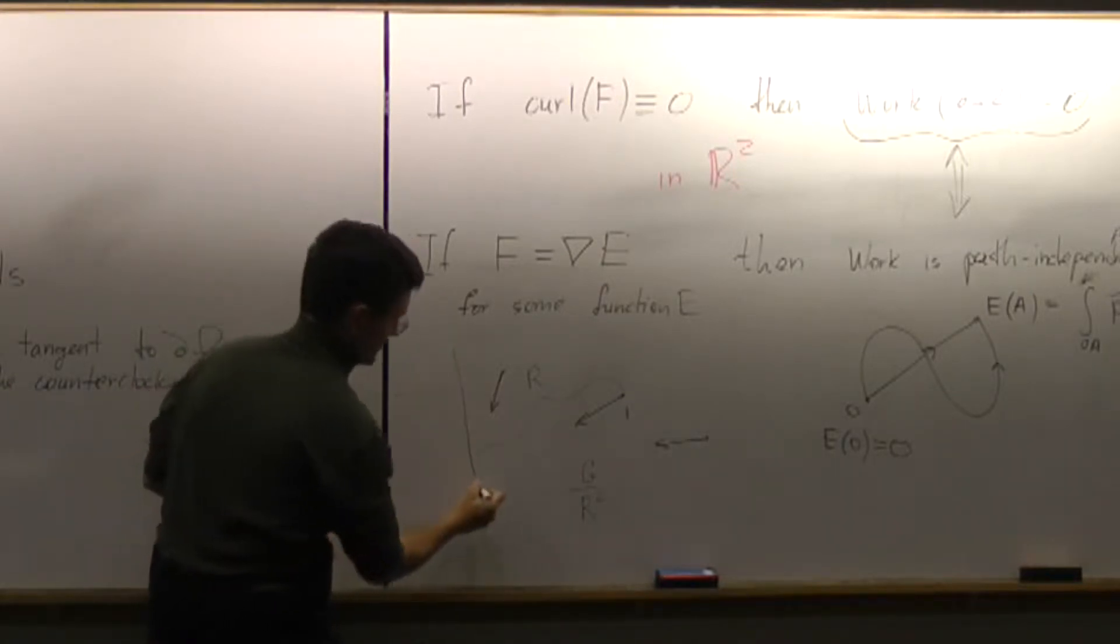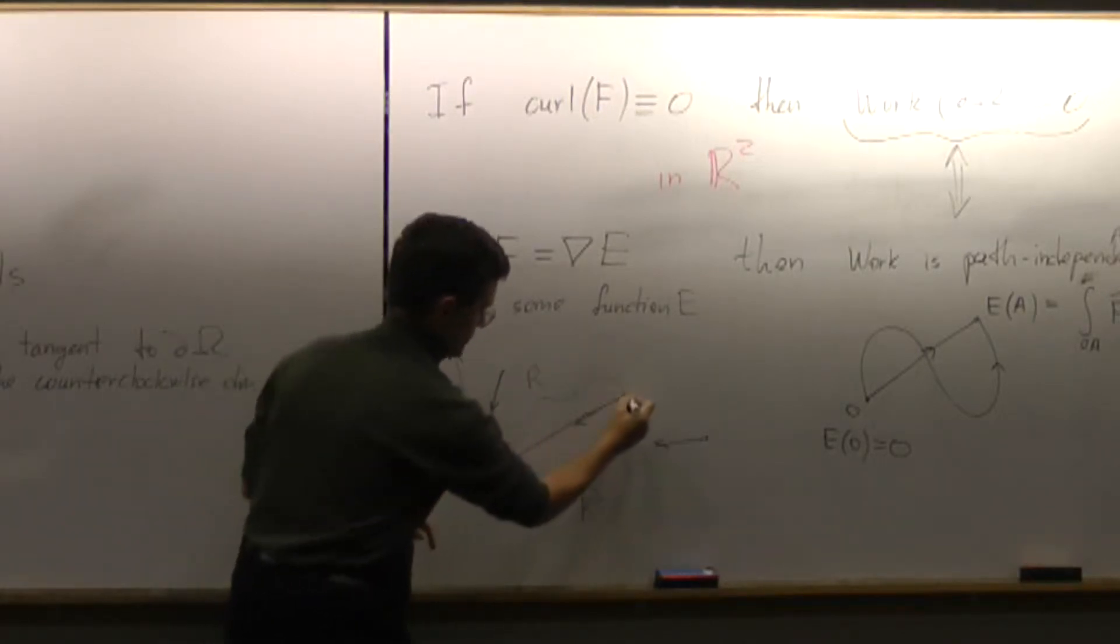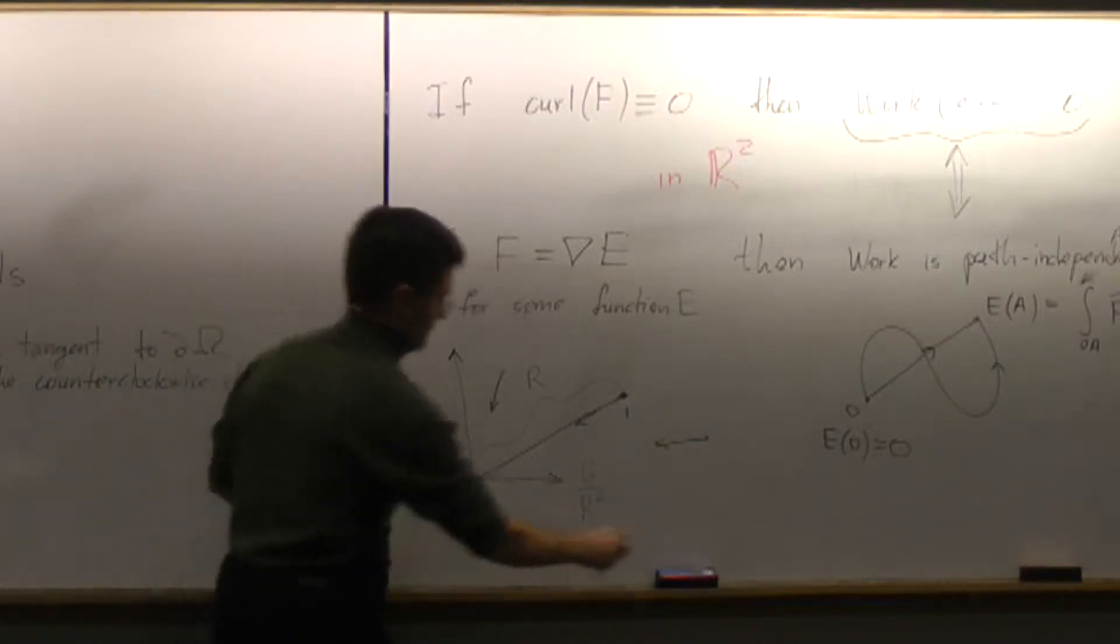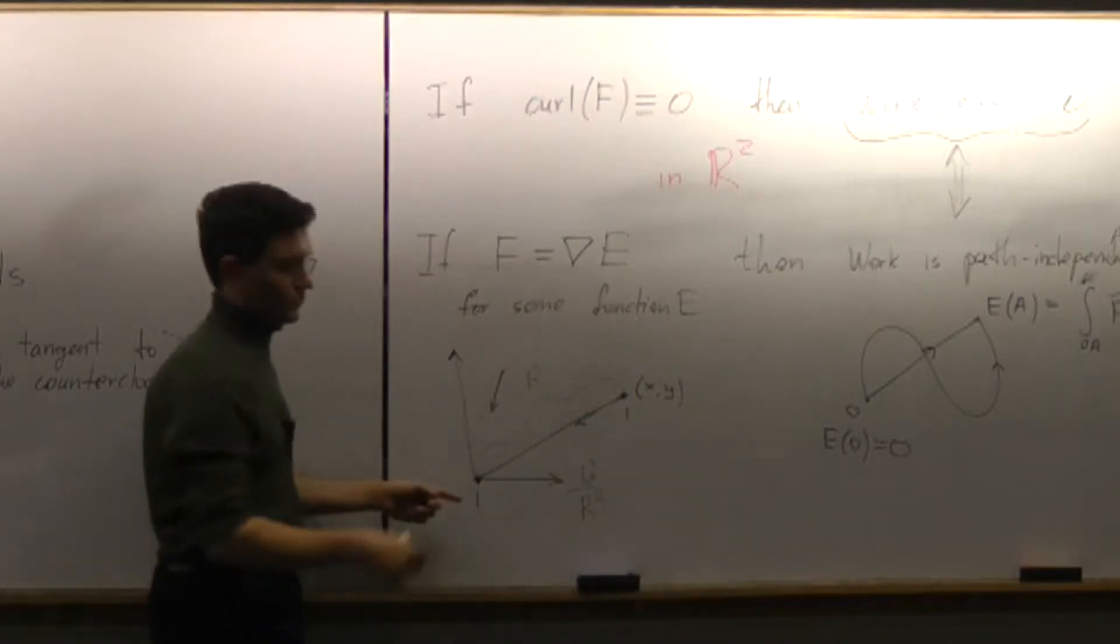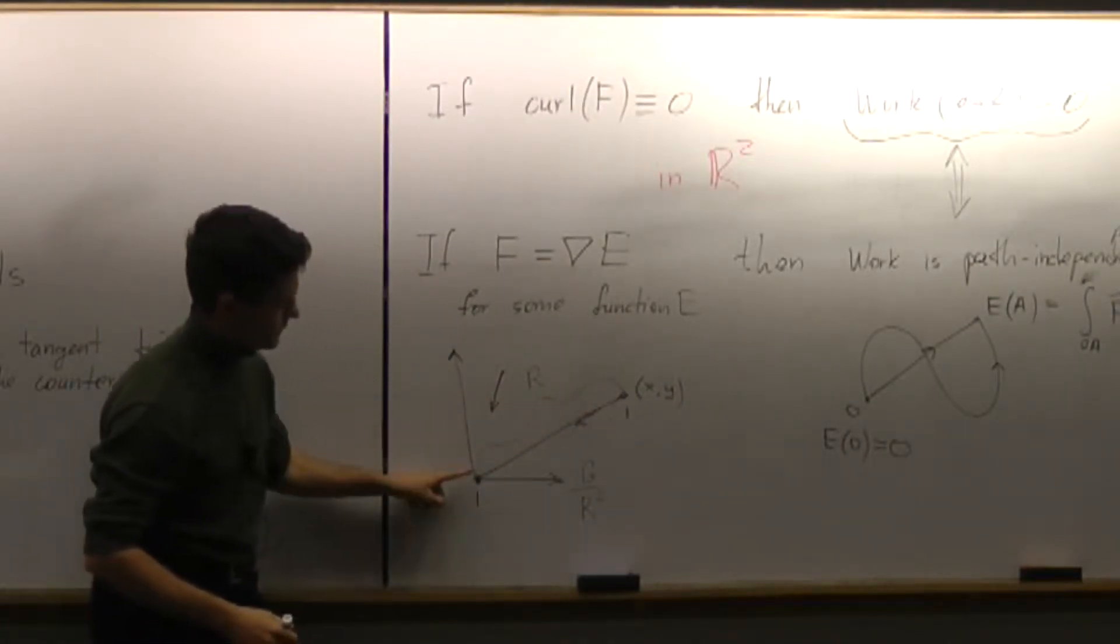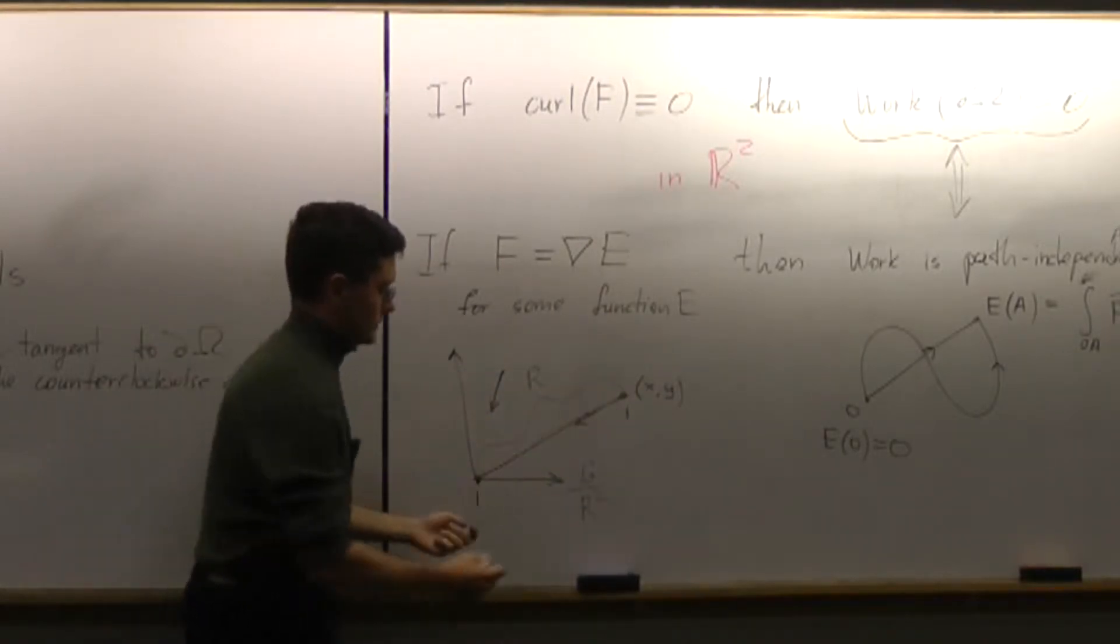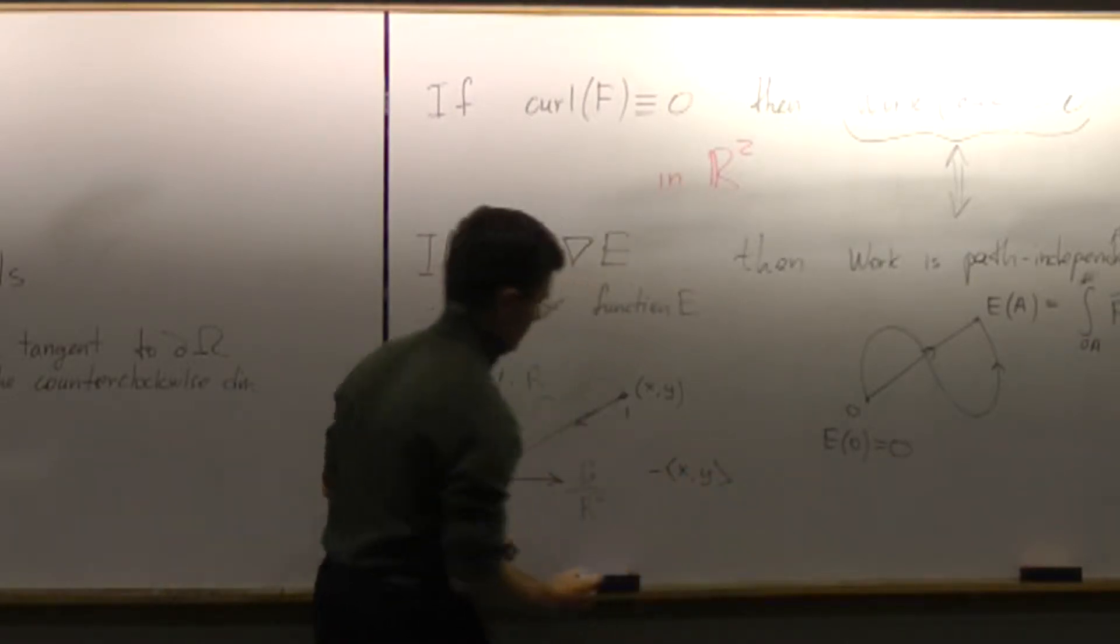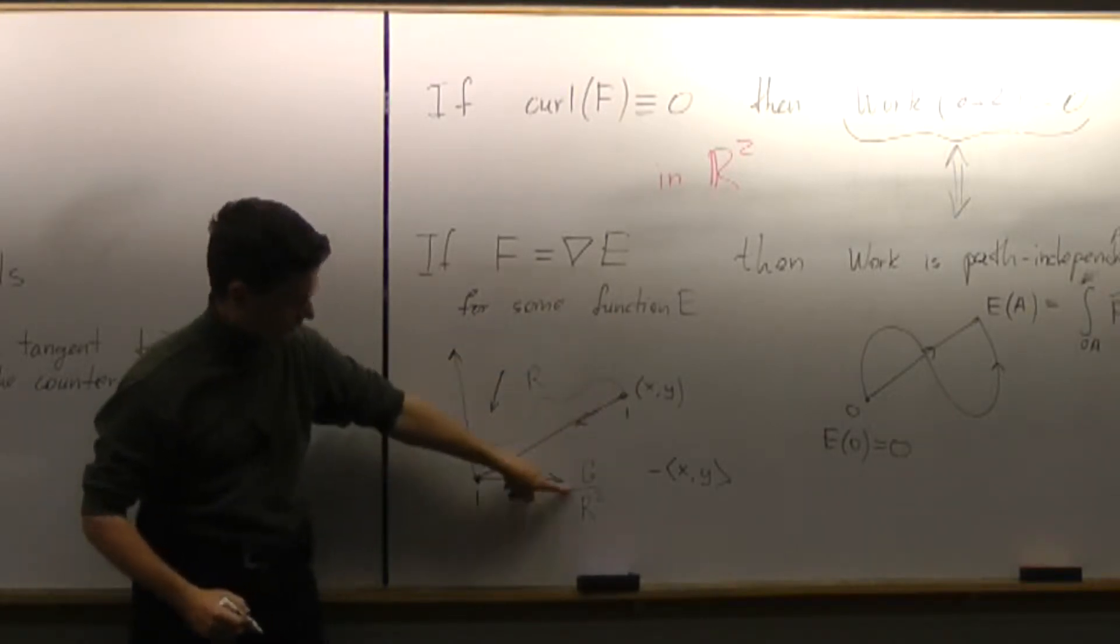If I put coordinate system there, I can figure out what the vector field is as a formula. If this point is positioned at the point xy, then this direction is the direction of the vector xy. The opposite direction is the direction of minus xy. So I know now the direction of this vector, and the magnitude is right there.